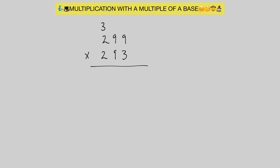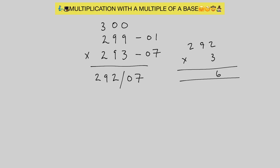Here again we're working off a multiple of a base — 300, which is a multiple of 100. 299 is minus 1 away from 300, and 293 is minus 7 away from 300. For the left hand side: 293 minus 1 gives us 292. For the right hand side: negative 1 times negative 7 gives us positive 7. We need two digits, so we write it as 07. To complete this, we multiply 292 by 3: 3 times 2 is 6, 3 times 9 gives us 27, 3 times 2 gives us 6 — doing our carries, we get 876. So our final answer is 87,607.